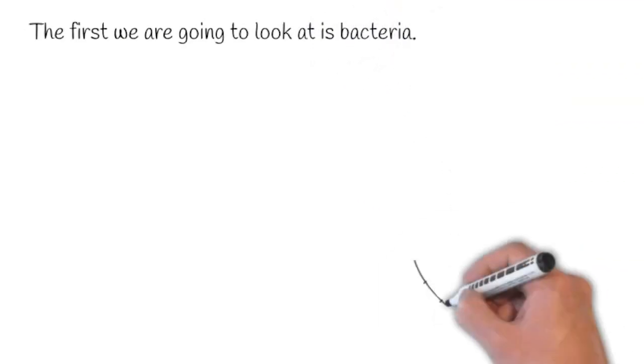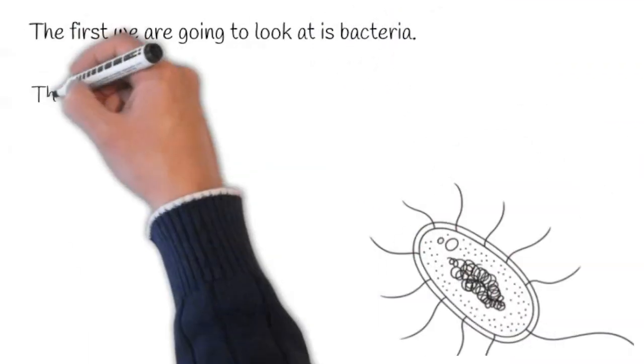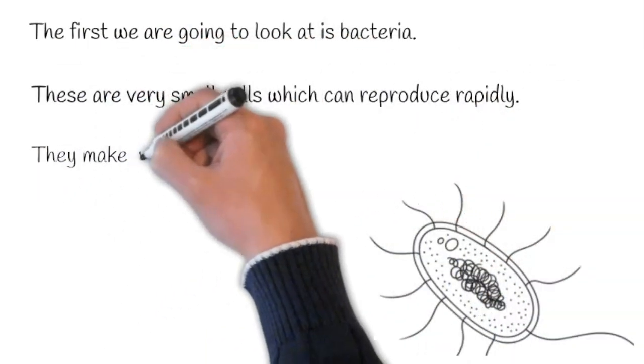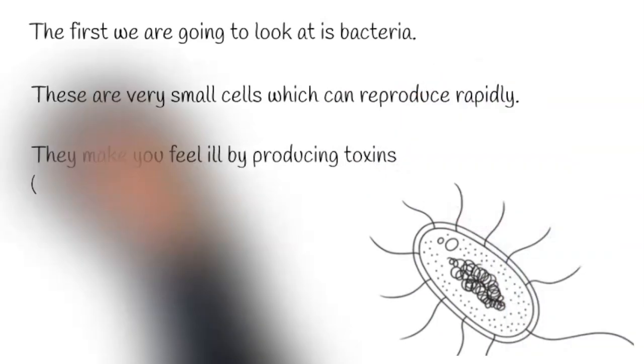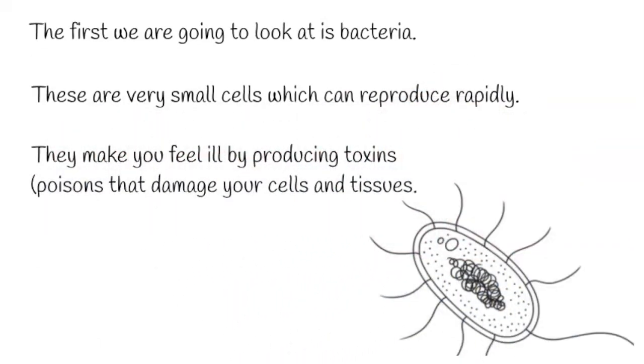The first we are going to look at is bacteria. These are very small cells which can reproduce rapidly. They make you feel ill by producing toxins which are kind of like poisons that damage your cells and tissues.